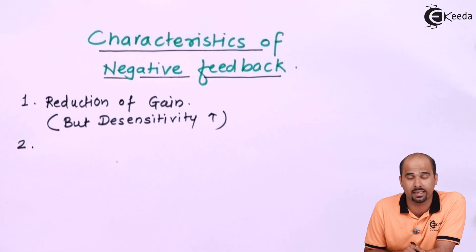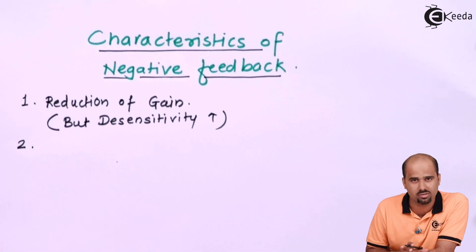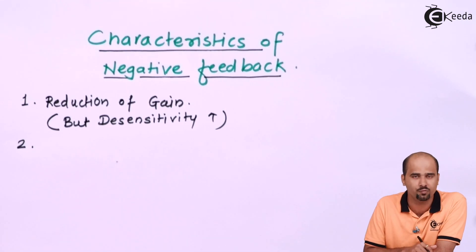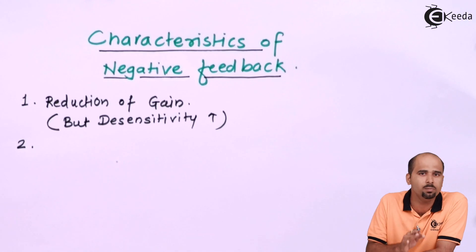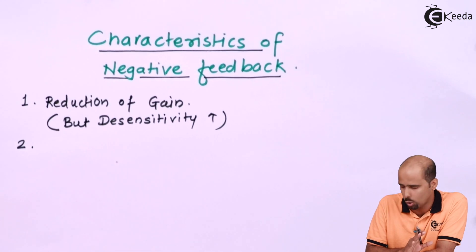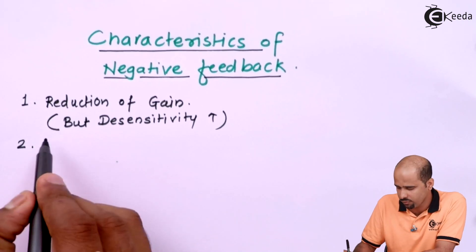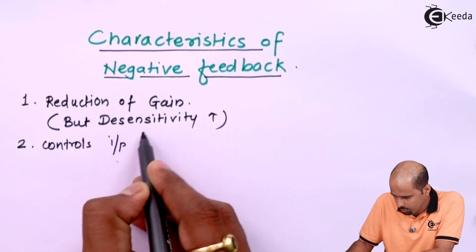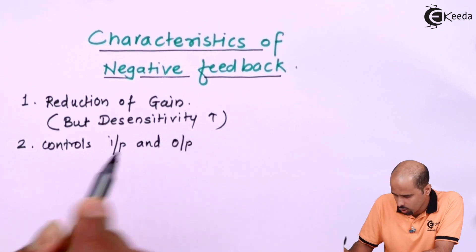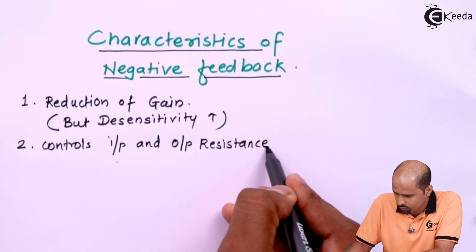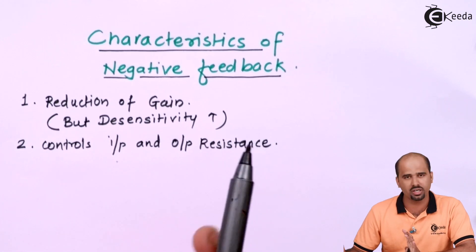The second characteristic that we will be getting is that negative feedback controls the input and output resistance. As far as amplification is concerned, we all know that for ideal voltage amplification, the input resistance should be very, very high and the output resistance should be very, very low. So it controls input and output resistance.